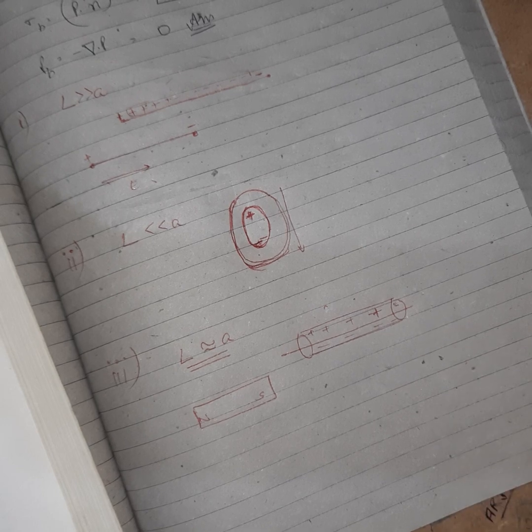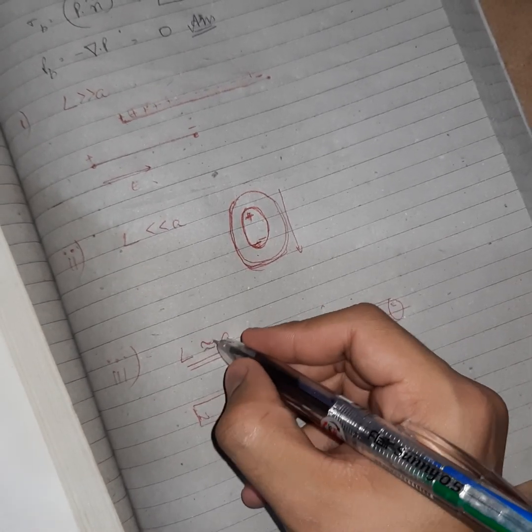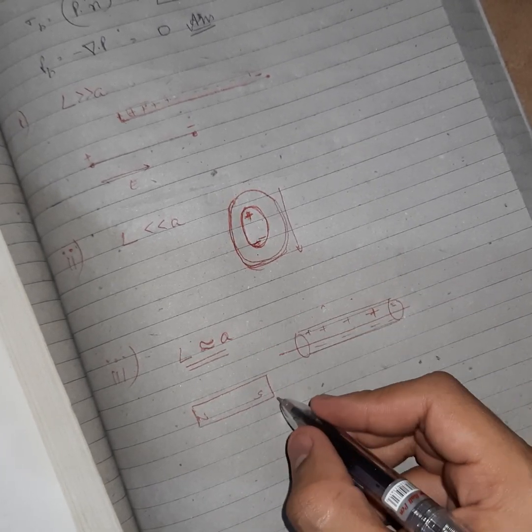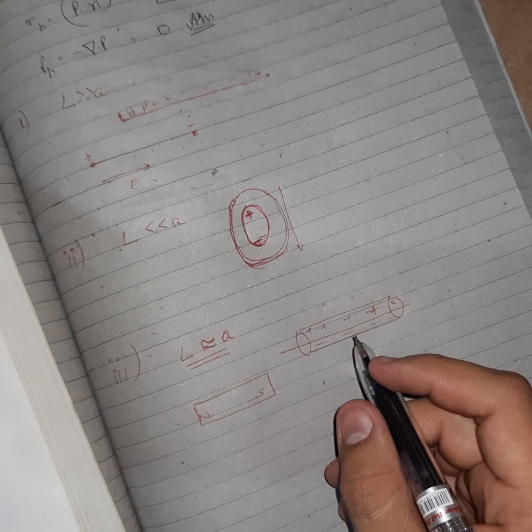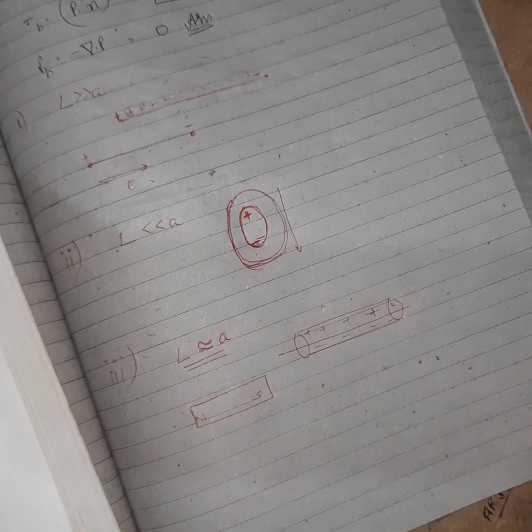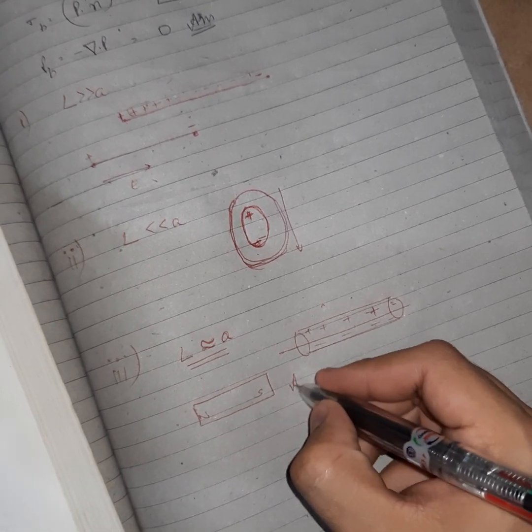So for bar, if l is approximately equal to a, then it will act like a bar magnet. And it also, it is also mentioned here bar electrode. So that will be the concept when l is approximately equal to a.